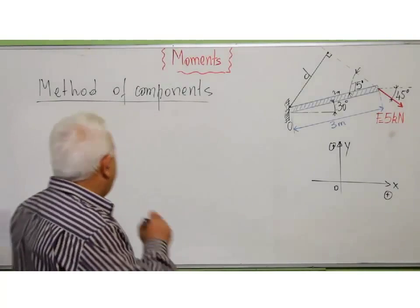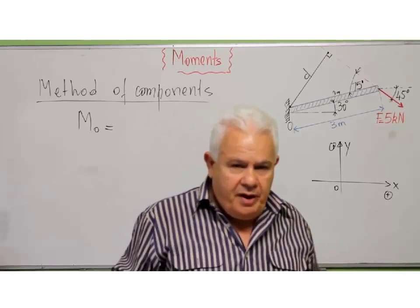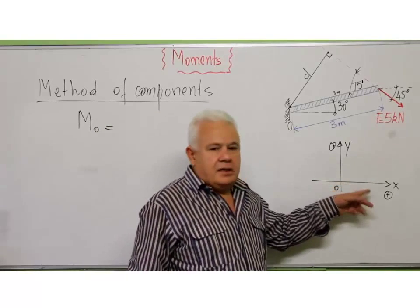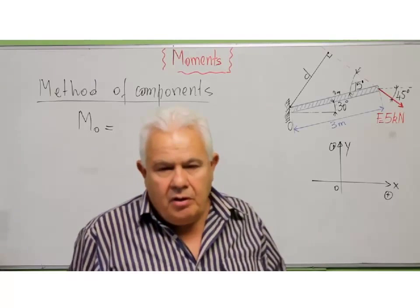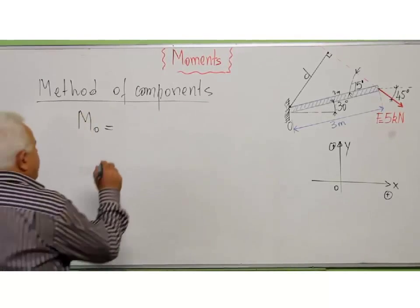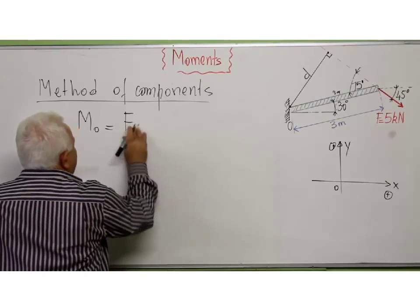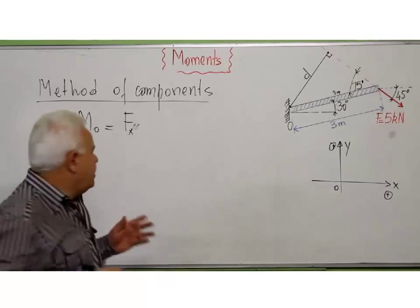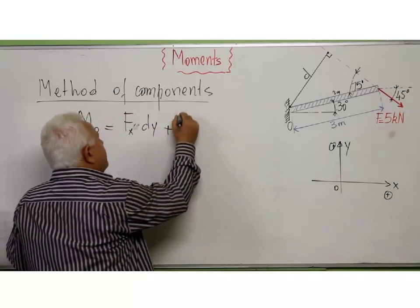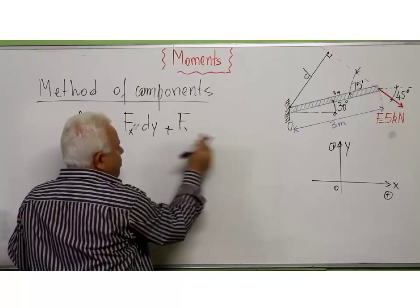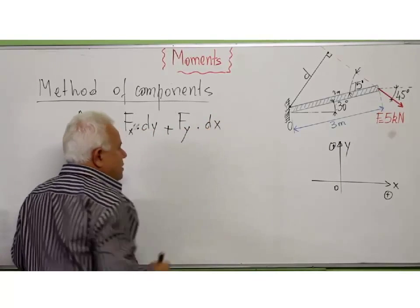Now, the method consists of finding the component of the force F along x and along y and to multiply these components by the distances. So it will be, for example, for a force, it will be Fx, the component of the force along x, times dy, the distance from the y axis, plus the force along the component of this force along y times the distance to the x axis.